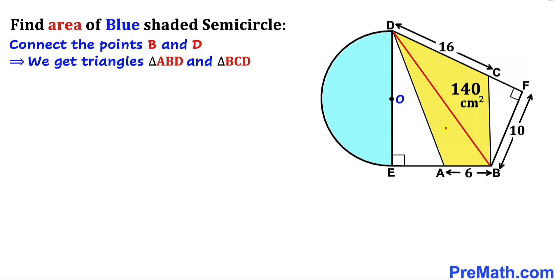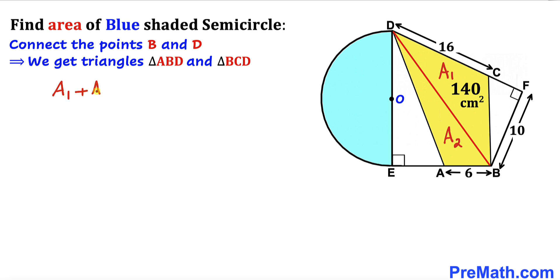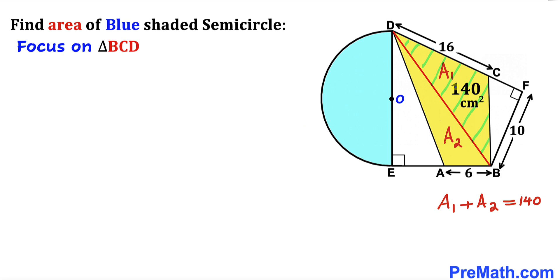Let's assume the area of triangle ABD is a_sub_1 and the area of triangle BCD is a_sub_2. The total area of the yellow quadrilateral is 140, so the total area equals the sum of these triangle areas: a_sub_1 plus a_sub_2 equals 140 centimeters square.